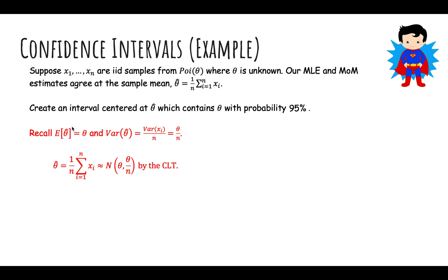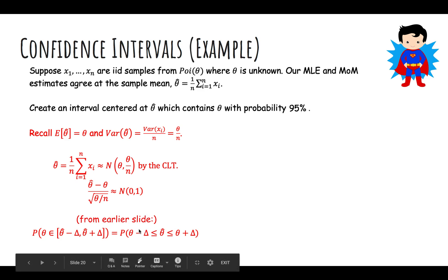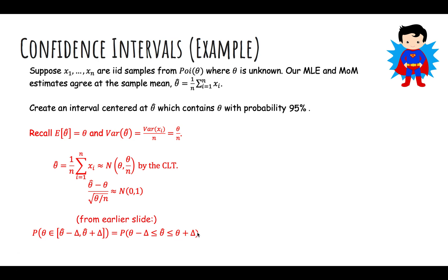By the central limit theorem, theta hat is normally distributed approximately with mean theta, variance theta over n. We can standardize to get normal 0, 1. Let's start from what we had earlier - probability that theta hat falls between theta plus delta, theta minus delta. That's one of the three equivalent formulations. Let's rearrange, subtract theta from all sides, divide, so we're standardizing all the sides.